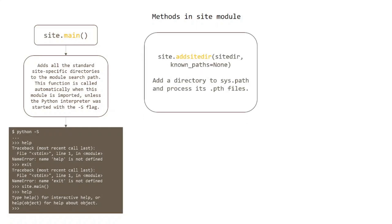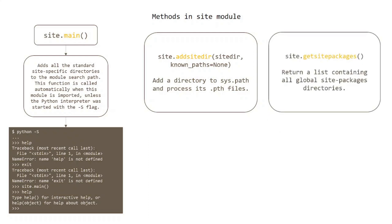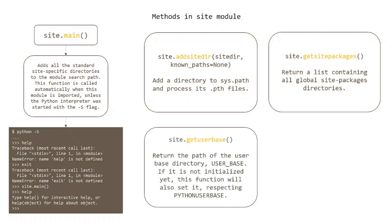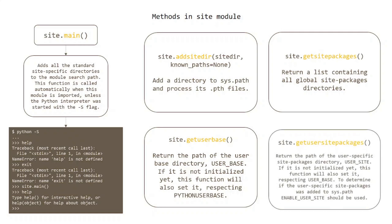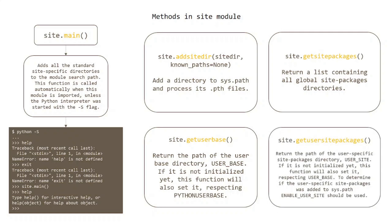The addsitedir() method takes one mandatory parameter, sitedir, and adds a directory to the system path and processes its .pth files. getusersitepackages() returns a list containing all global site-packages directories. getuserbase() returns the path of the user base directory; if it is not initialized yet, this function will also set it, respecting PYTHONUSERBASE. To determine if the user-specific site-packages was added to the system path, ENABLE_USER_SITE should be used.